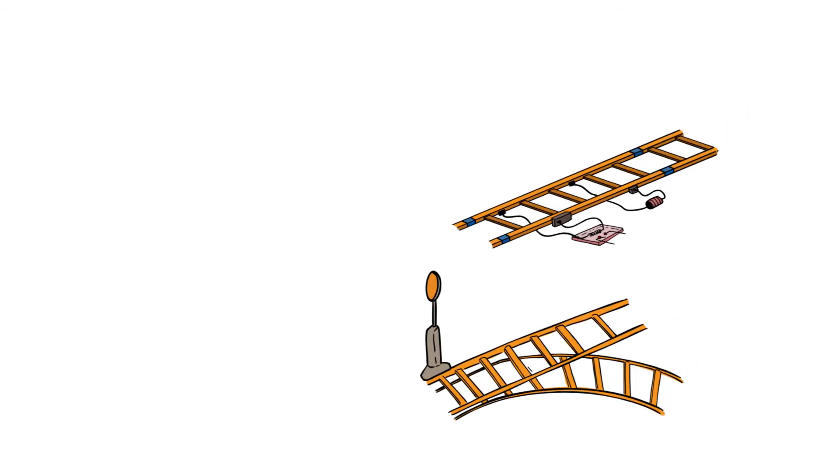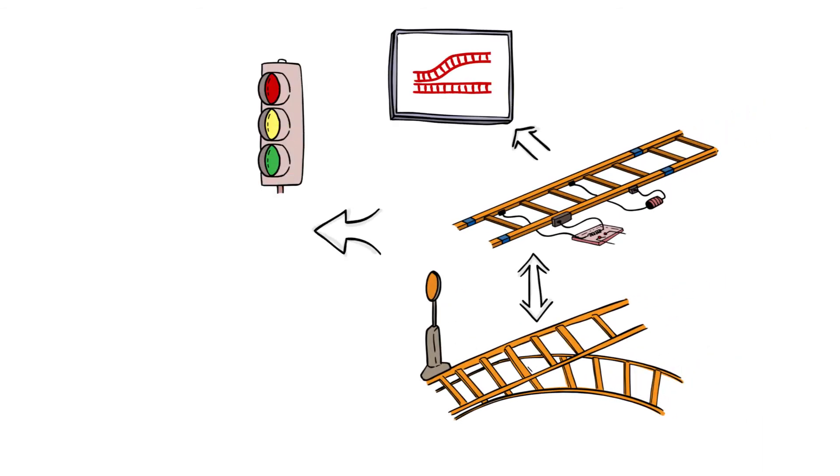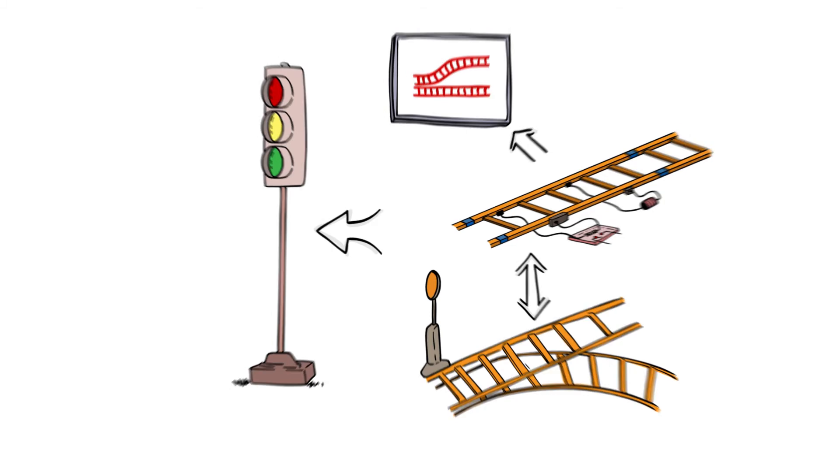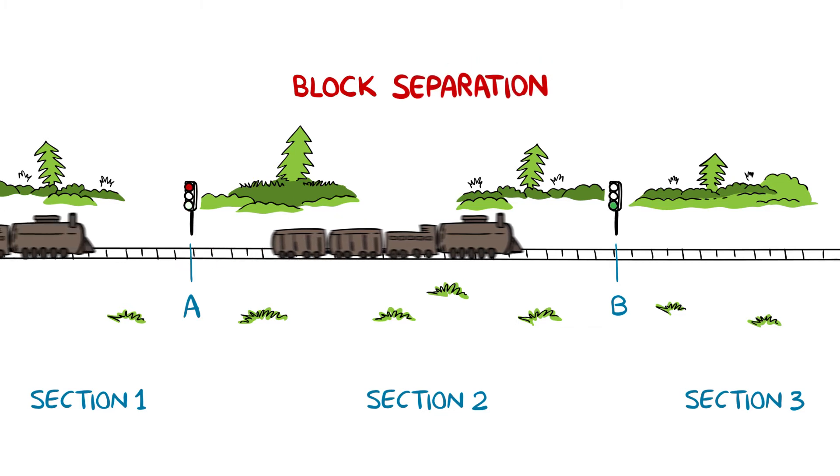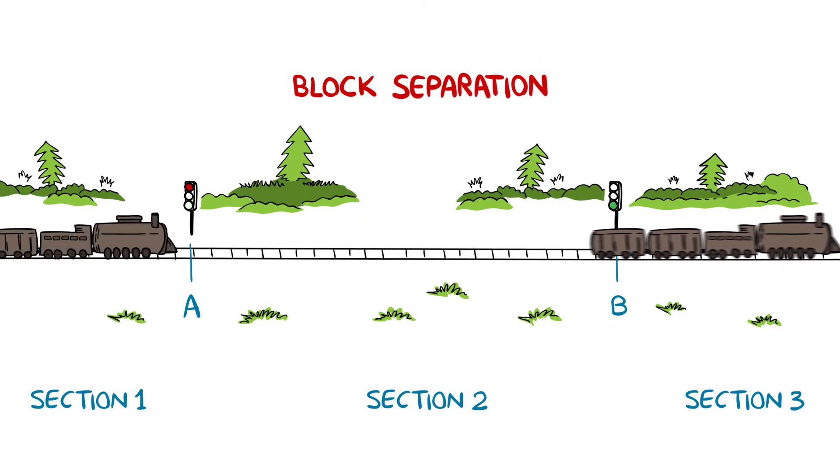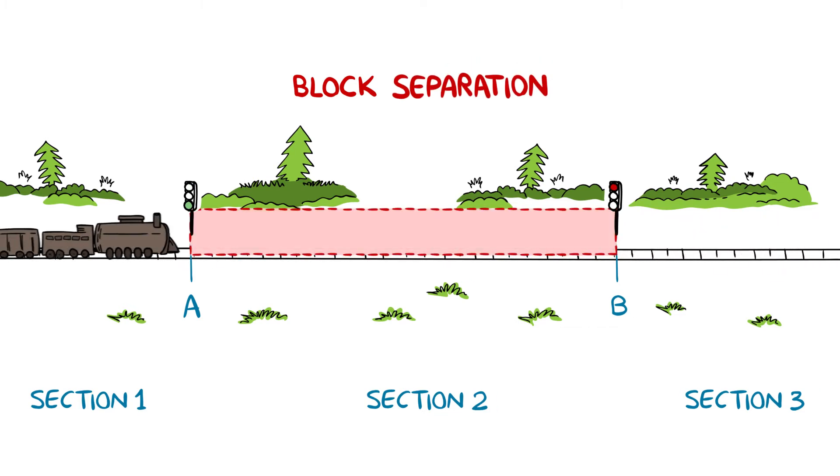The track circuit integrated signals, switches, and levers and panels into a mechanism to control the safe movement of trains along a track. The track circuit also gave rise to the concept of block separation between trains, meaning one train in one block and one empty block between trains.